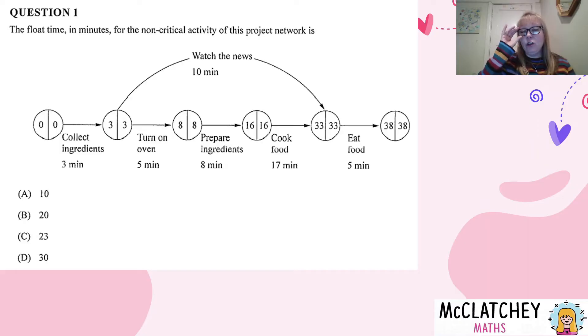The float time in minutes for the non-critical activity of this project network is, and then we have a picture of a project network starting from collecting ingredients, turning on the oven, preparing ingredients. Looks like a recipe to me.